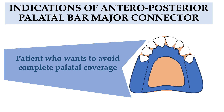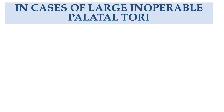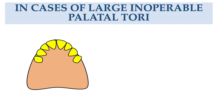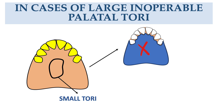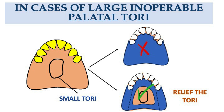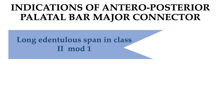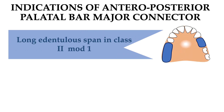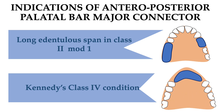It is indicated in cases of large inoperable palatal tori — as seen in the figure, if a tori is present, complete palatal coverage is not indicated, so the anterior-posterior palatal bar is given to relieve the tori. Additional indications include large edentulous spans in Kennedy's Class II modification 1 and Kennedy's Class IV, where anterior teeth are missing and posterior teeth remain.